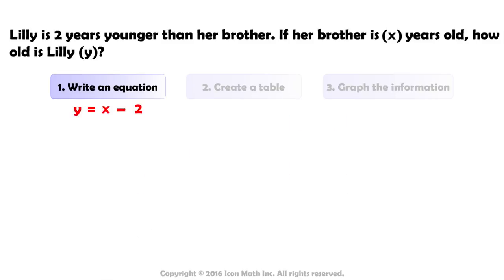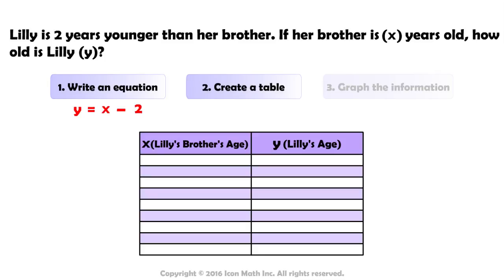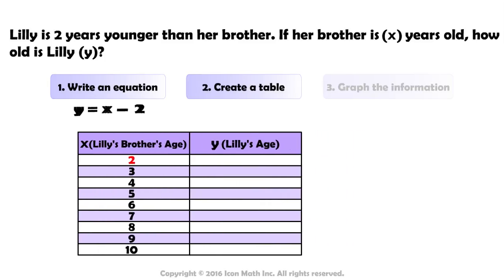Let's use this equation to create a table of values. For the x values, we will start at two, because when her brother is two years old, Lily will be zero years old.